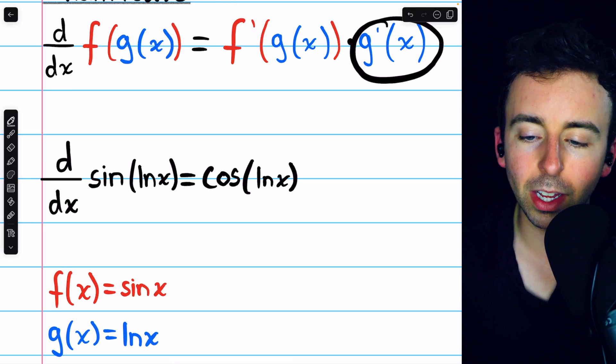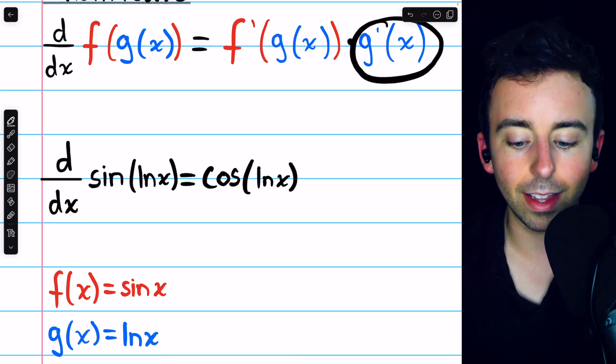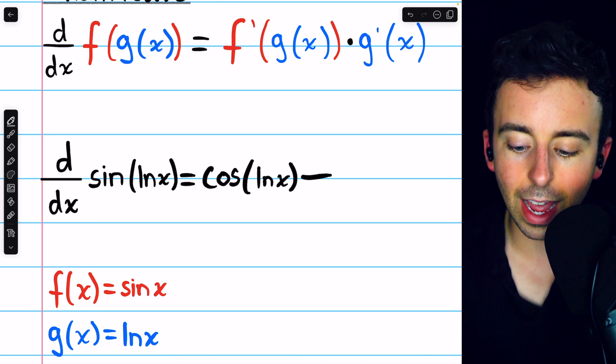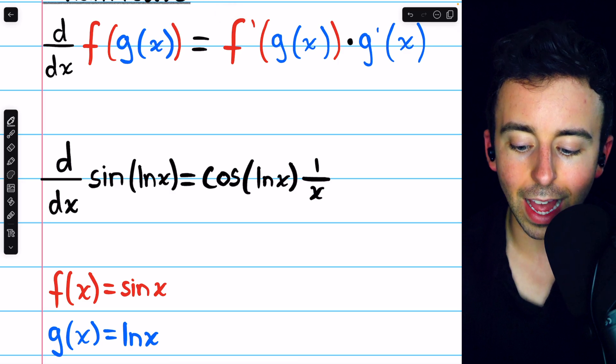But then we have to multiply by g prime, the derivative of that inside function. The inside function is ln(x), and the derivative of ln(x) is 1 over x.